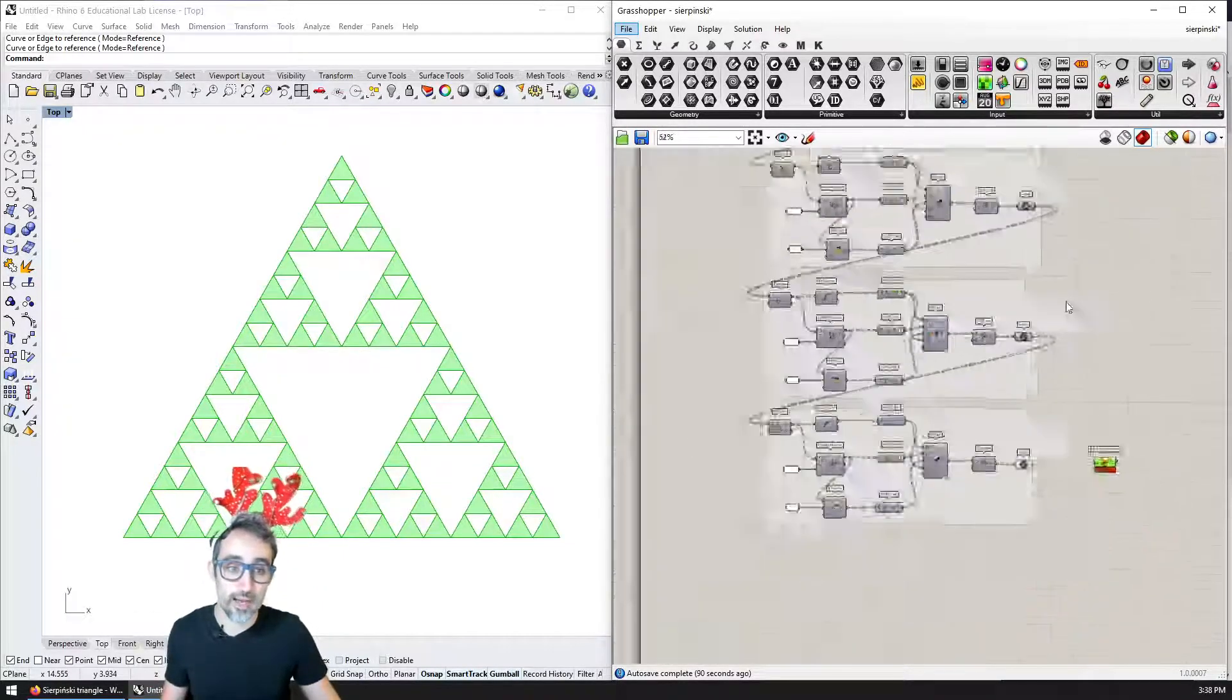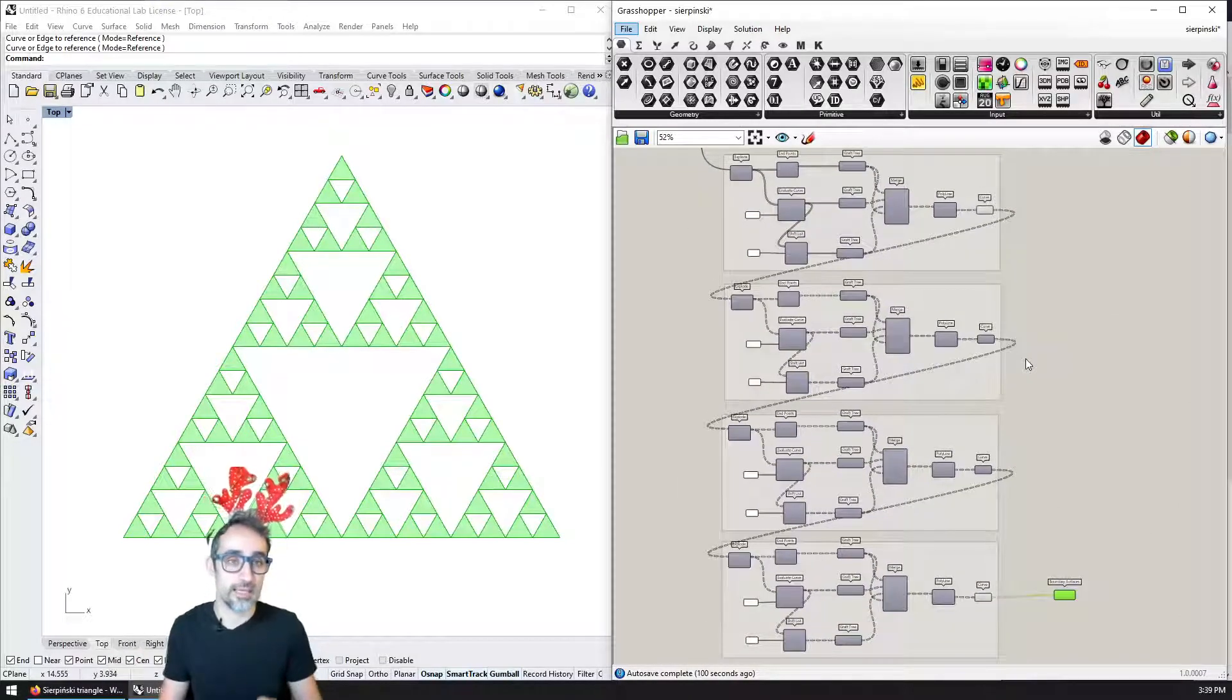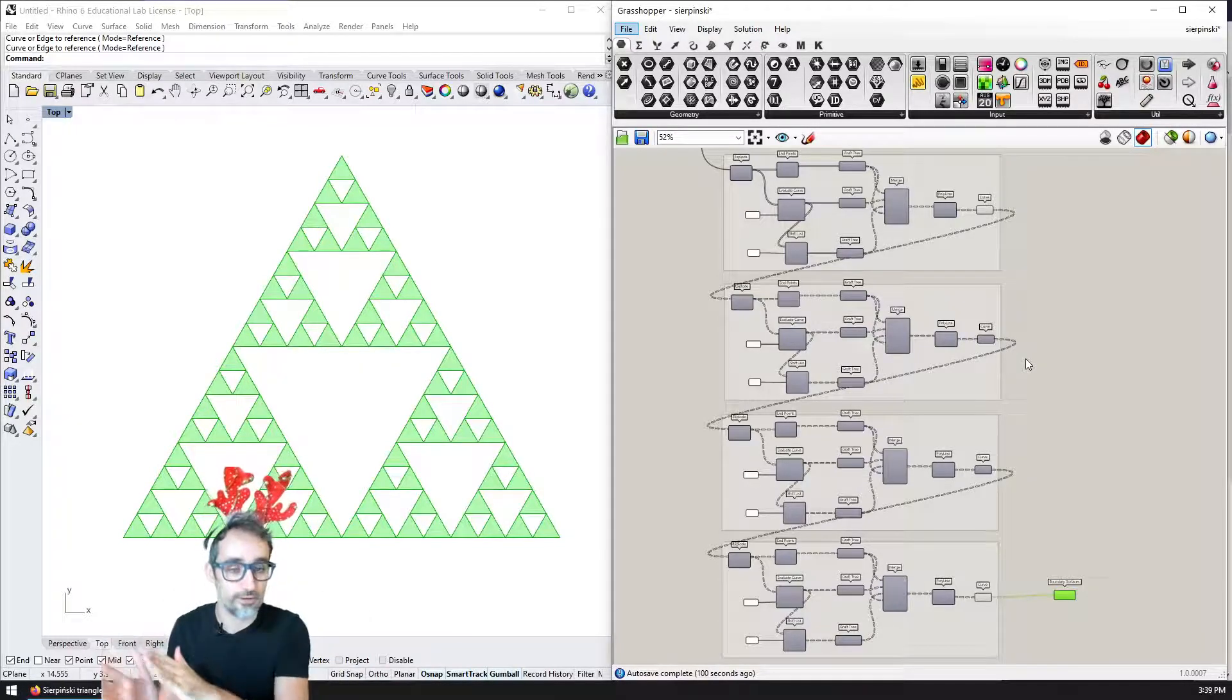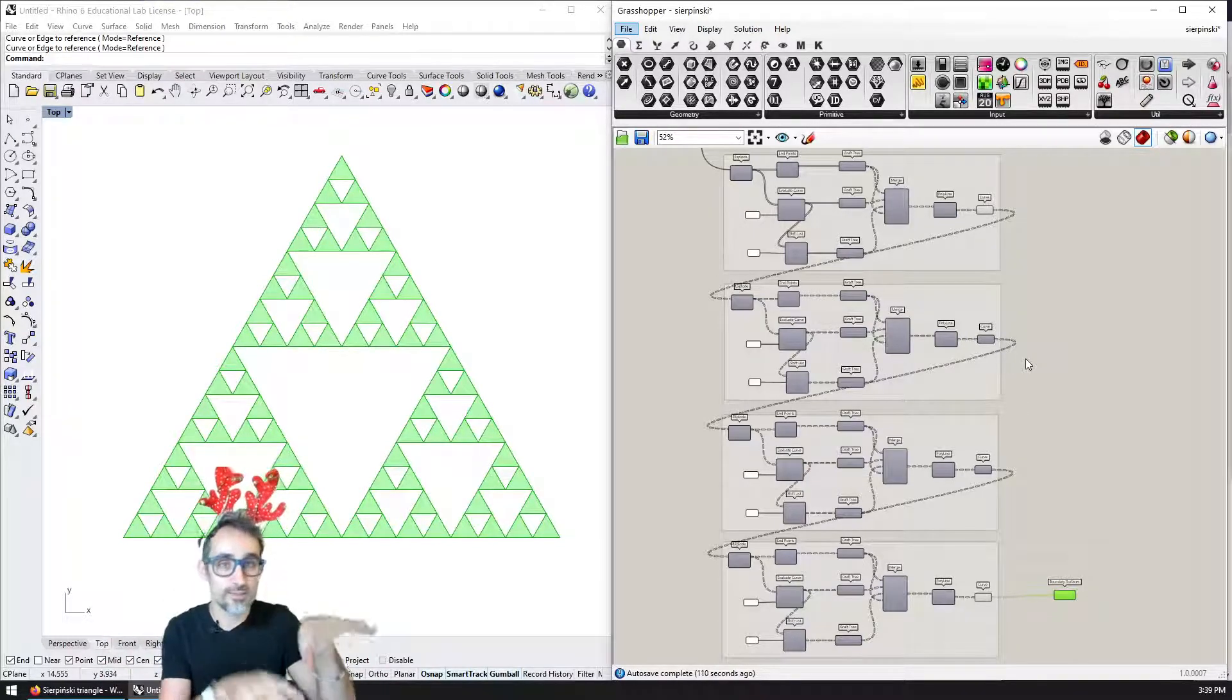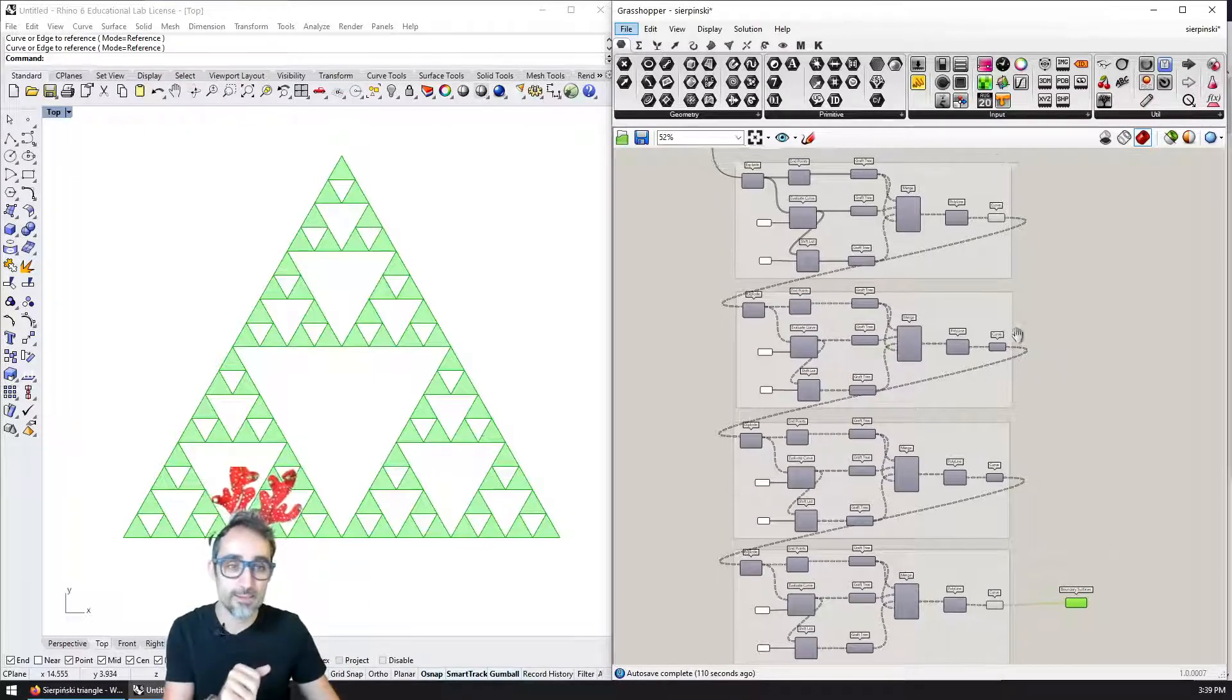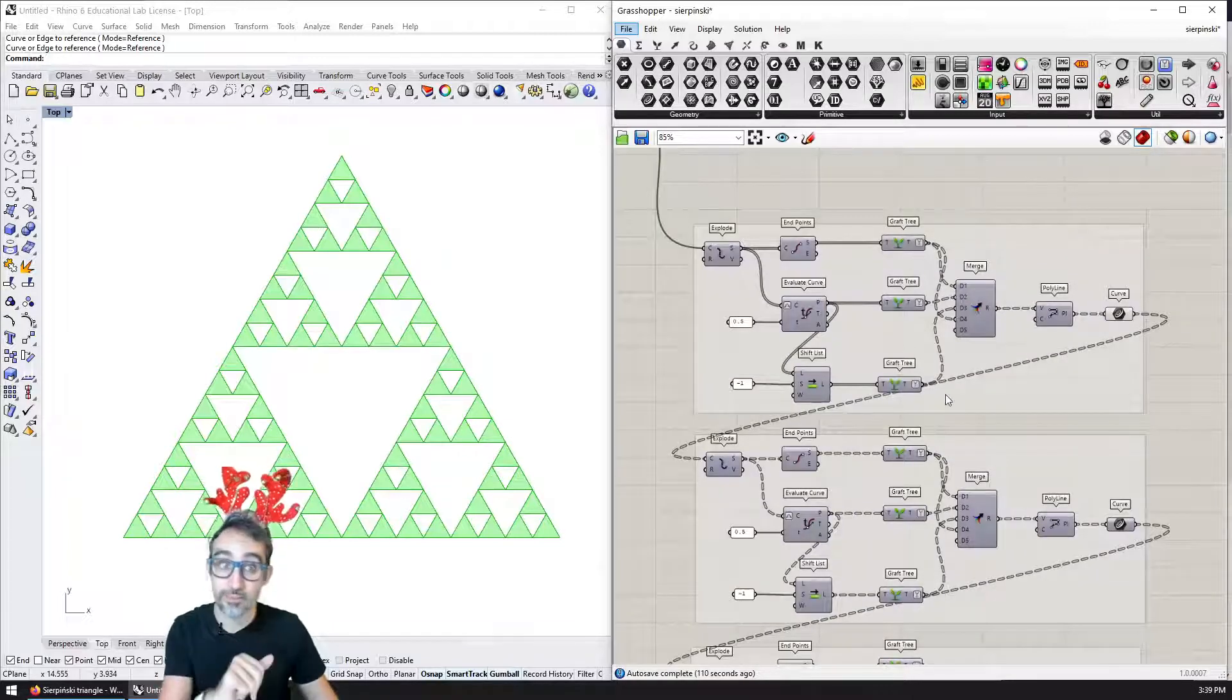In the second part, I'm going to show you how to implement it in vanilla Grasshopper. Grasshopper is a visual programming environment, an algorithmic modeling environment for Rhino, which is a 3D modeling environment that allows very simple, easy visual programming. It's going to involve a little bit of data manipulation, which is great.